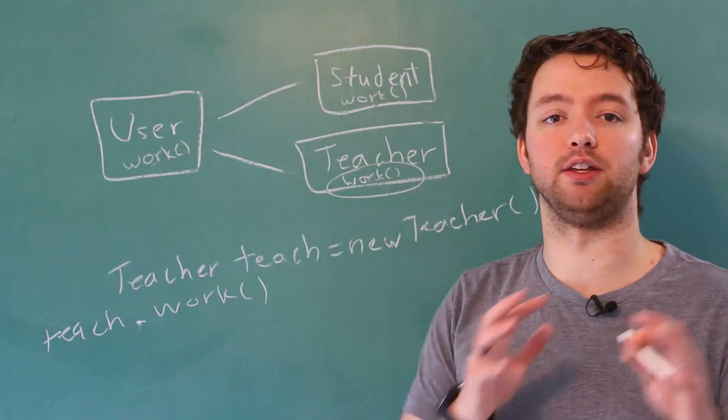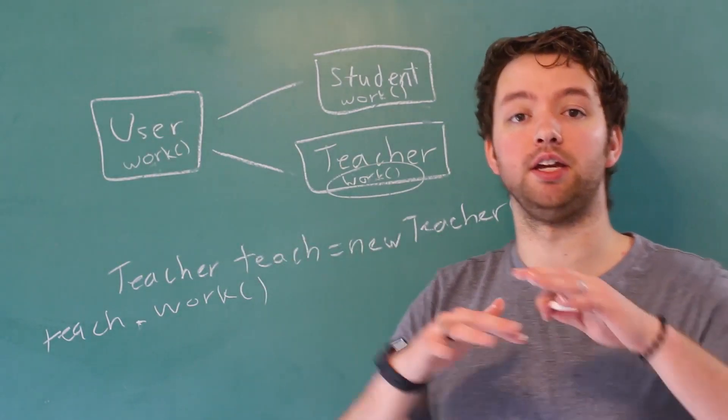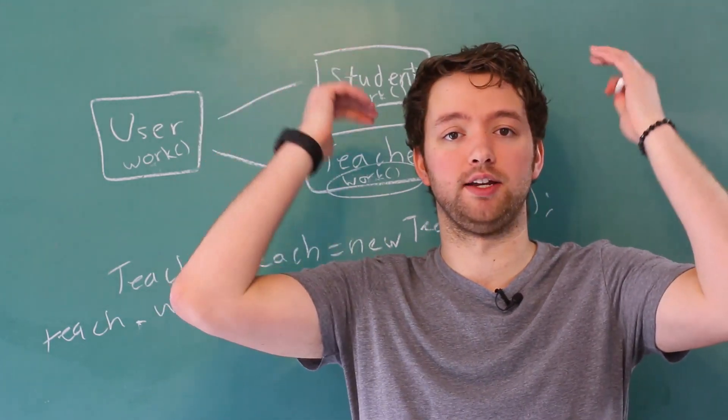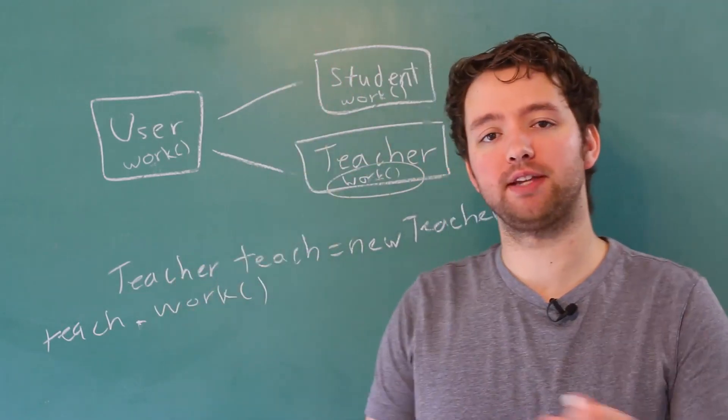So that's the whole concept of method overriding, basically derived classes giving new versions for methods that were originally defined in the base class. So hopefully that makes sense.